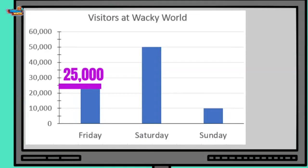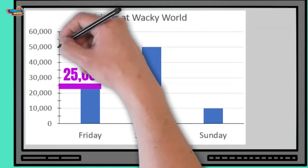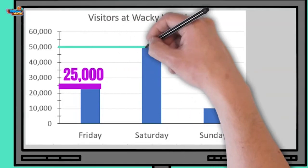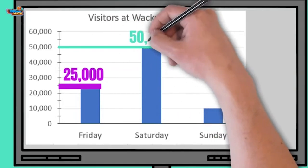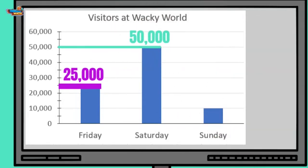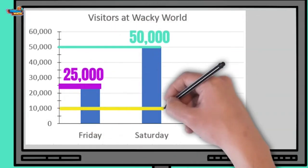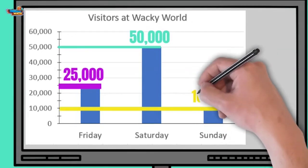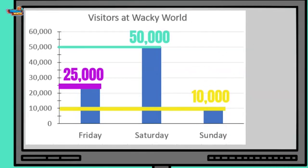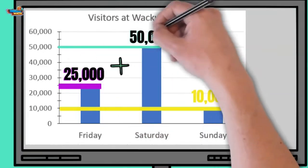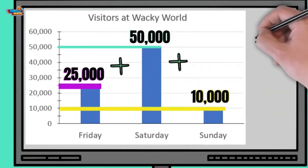This means 25,000 people visited the park on Friday. On Saturday there were 50,000 people, and on Sunday there were 10,000 people. It helps to write the labels on top of each bar so you don't have to keep everything in your memory.